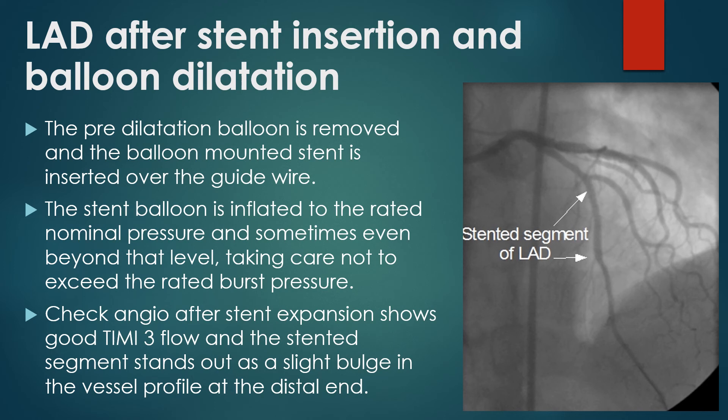The stent balloon is deflated and then removed under negative suction. The check angiogram after stent expansion shows good TIMI flow, and the stented segment stands out as a slight bulge in the vessel profile at the distal end.